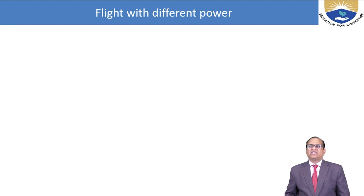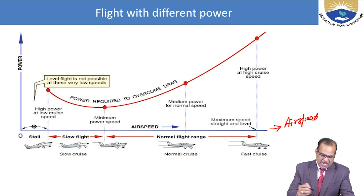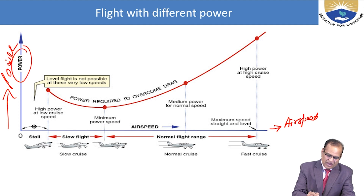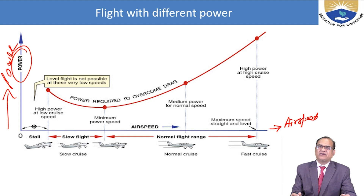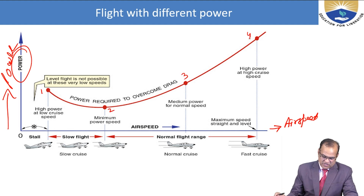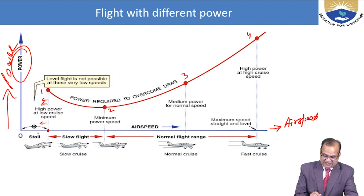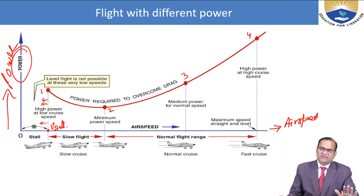Now I will discuss flight with different power. Here we can see a plot of power versus velocity — airspeed on the x-axis and power on the y-axis. We can see different points at speeds 0.1, 0.2, 0.3, 0.4. Level flight is not possible at very low speed. If the aircraft speed falls below a certain point, the aircraft cannot sustain. So the aircraft should always fly above this, which is called V_stall — the stall velocity. The aircraft cannot fly below this.